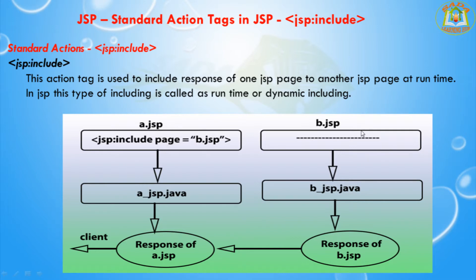While including, the control is sent to the next JSP page and comes back along with the response of that page. While sending the control, we can also add some parameters. If you want to send additional parameters along with the response, we can use the JSP colon param tag. The JSP colon param tag is used to include whatever additional parameters you want to send along with the response.